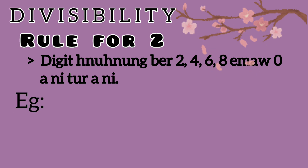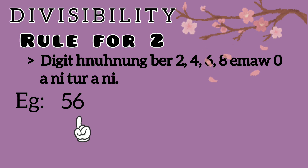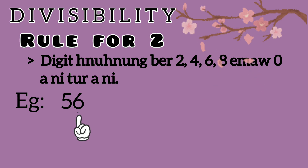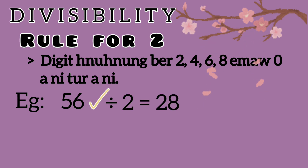So, an example: let's look at 56. The last digit — the digit is 6. 6 is in 2, 4, 6, 8, 0, so 56 is divisible by 2. 56 divided by 2 is 28.